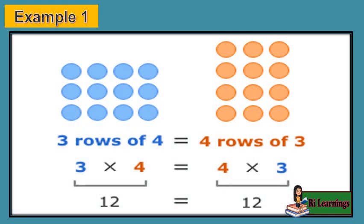Look at the example using a multiplication array. 3 rows of 4: 3 times 4 equals 12. Now reversing the order of multiplication, we get 4 rows of 3: 4 times 3 equals 12. The answer is the same even after changing the order of the numbers. Thus, the multiplication is commutative.